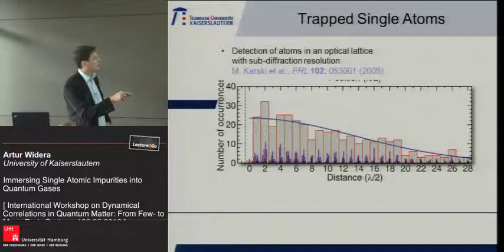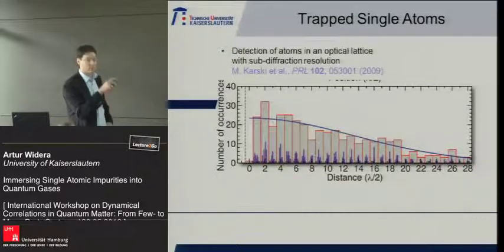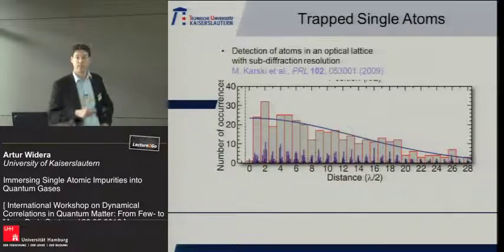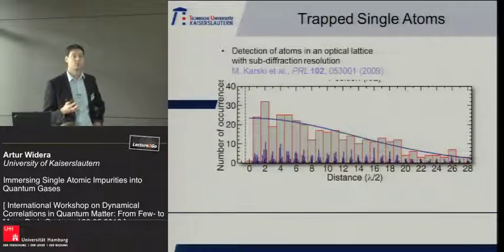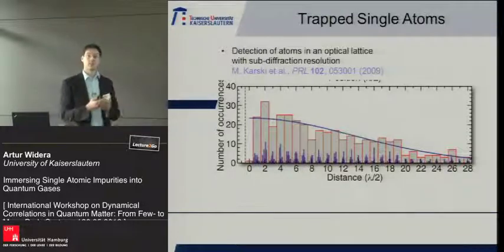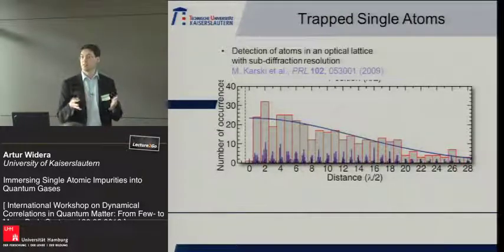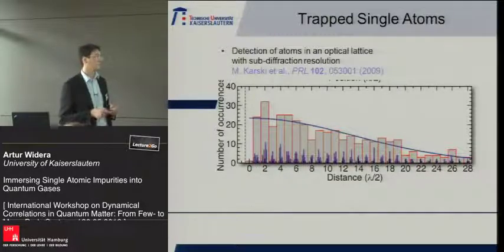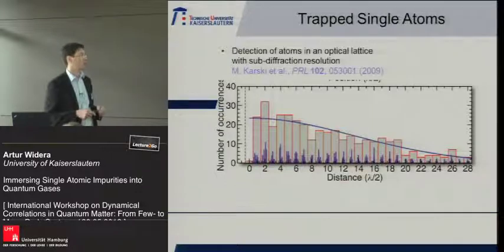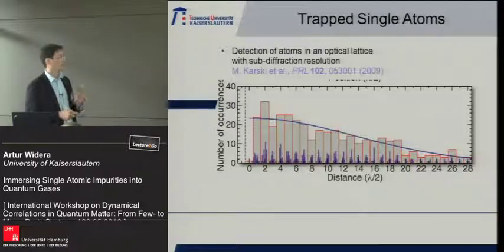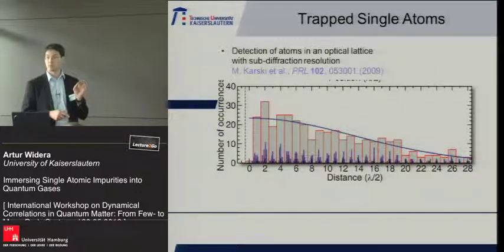What you see at zero distance — the same lattice site — is what Stefan described: light-induced collisions. As soon as you have two atoms at the same lattice site and illuminate them with near-resonant light, they immediately get lost in our tight traps. So we can detect atoms with high resolution.